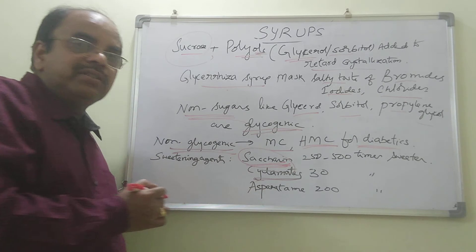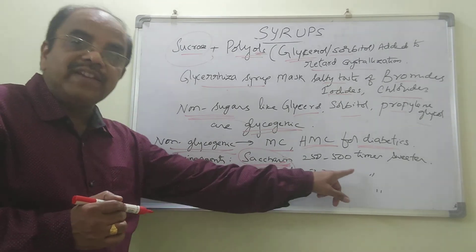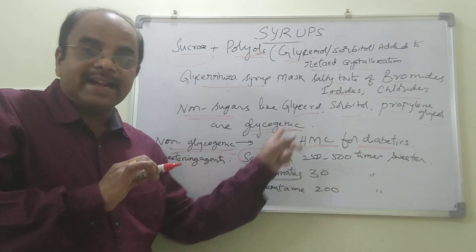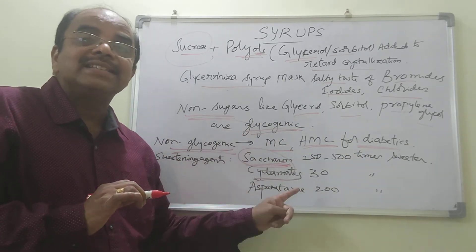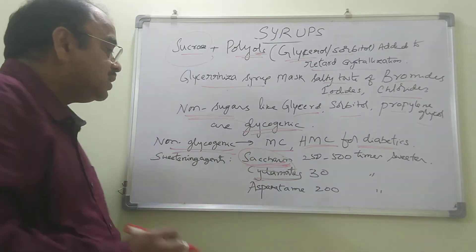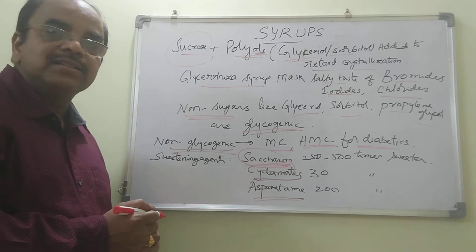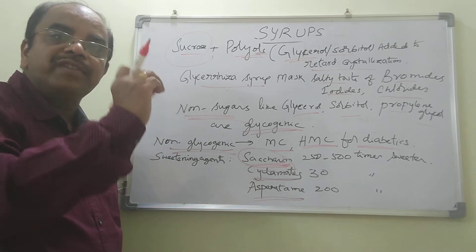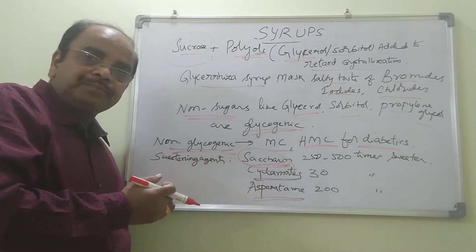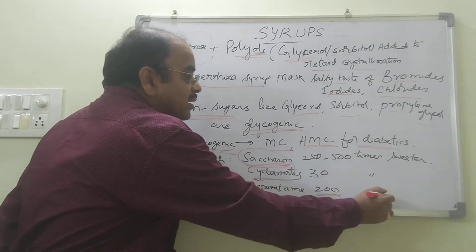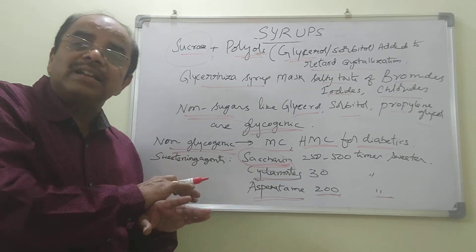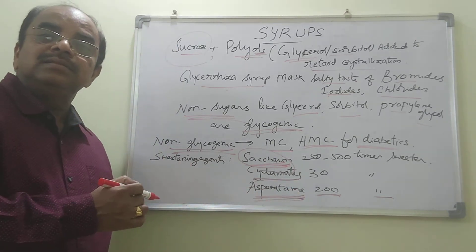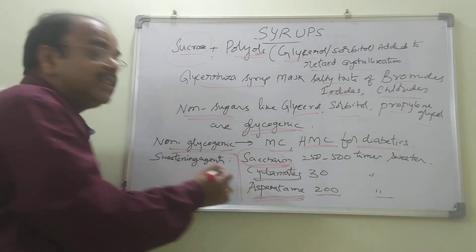Alternatively, we can use cyclamates — 30 times sweeter when compared to sucrose. There is no bitter aftertaste unlike saccharin, but it has the problem of causing cancer. So nowadays, aspartame is most commonly available in the market. For diabetic patients, we use non-sugar, sugar-free pellets made of aspartame. It is 200 times sweeter when compared to sucrose. It does not have bitter aftertaste and it does not cause cancer. So aspartame is the best sweetening agent generally used in the preparation of syrup for diabetic patients.